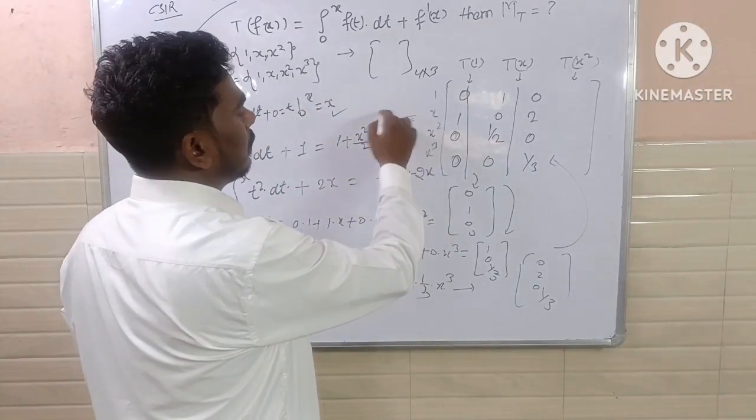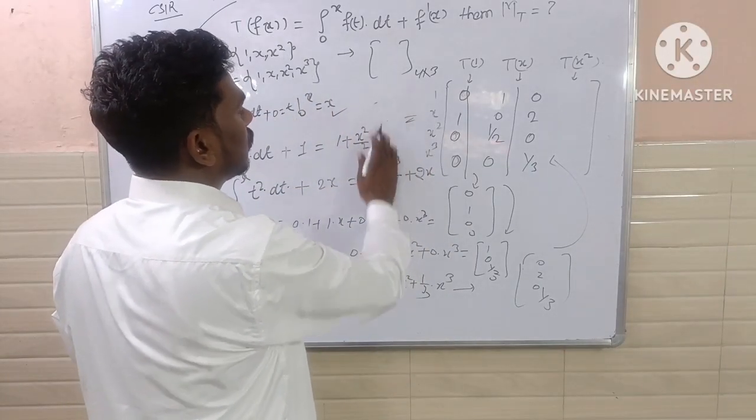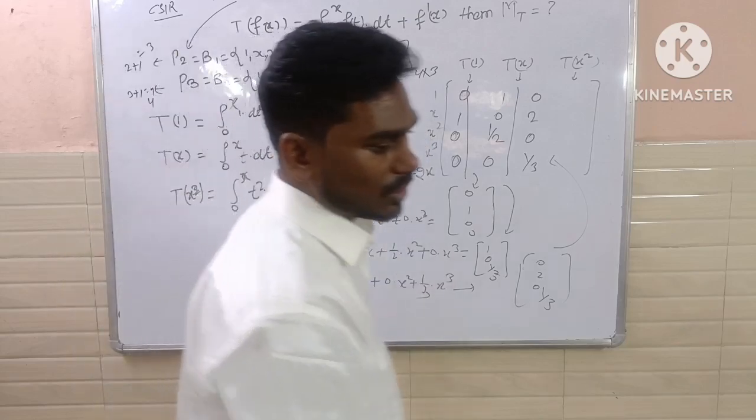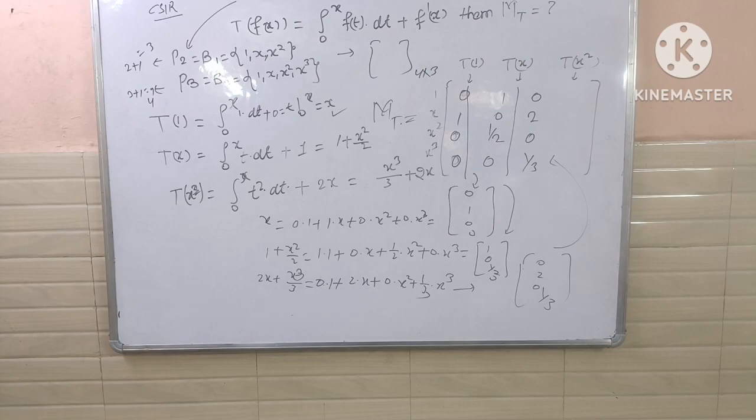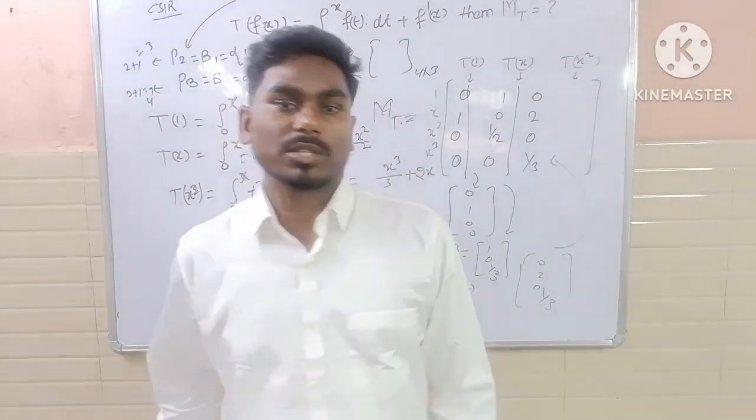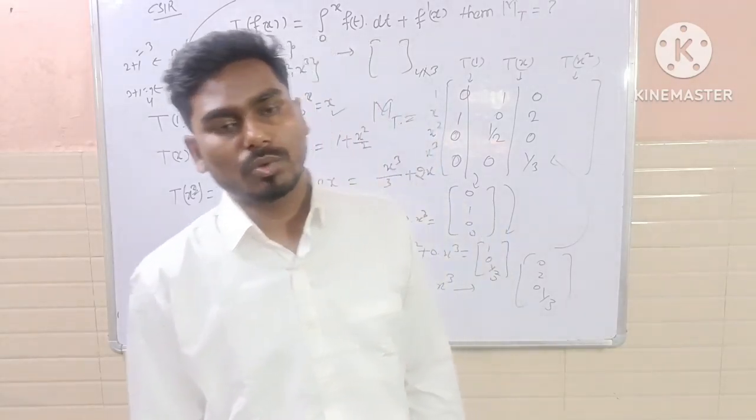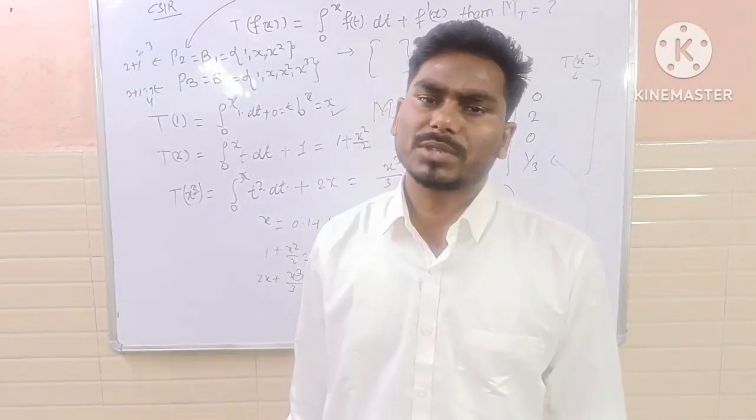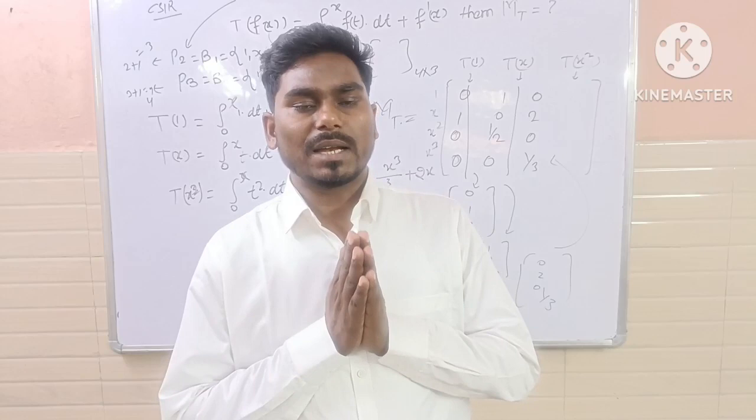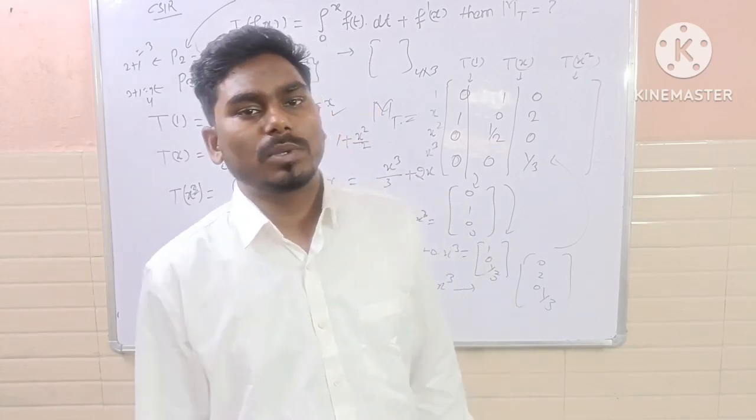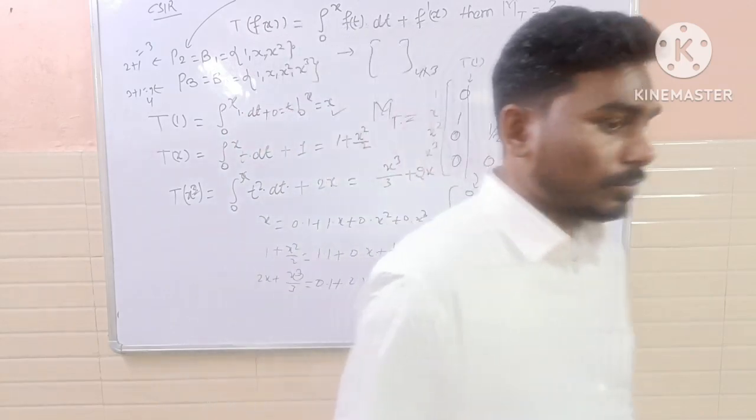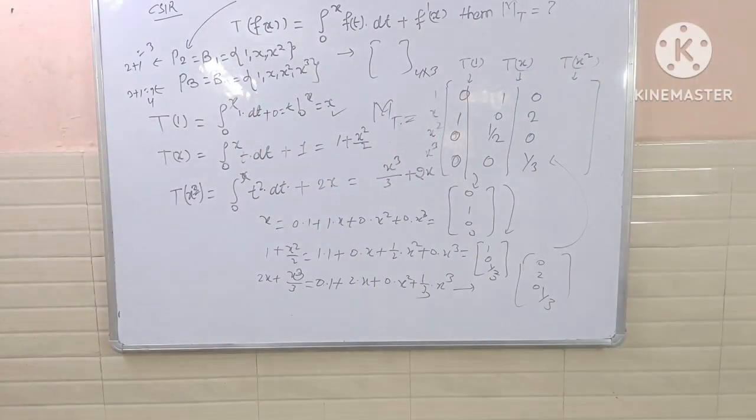So this is what the matrix representation is with respect to the given linear transformation having the basis P2 and P3. I hope you can understand the results. So this will be a new result. Make sure you subscribe and don't miss it. So we'll end today's video here. We'll meet in the next video. Until then, goodbye. Thank you.